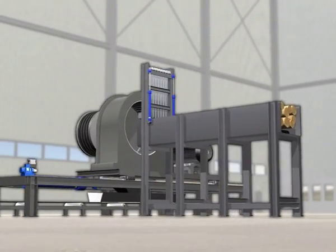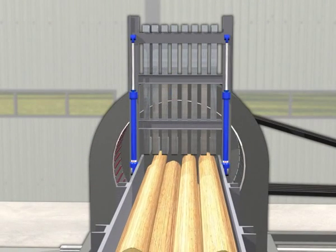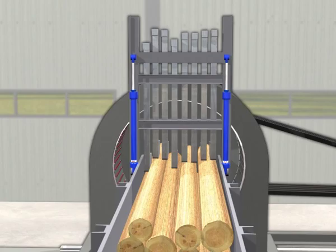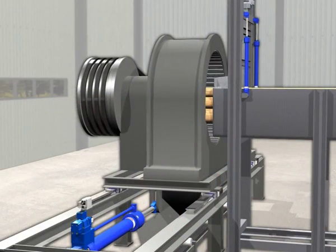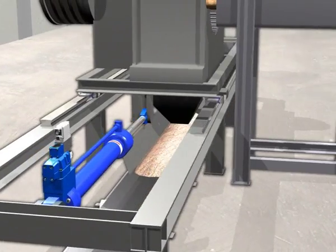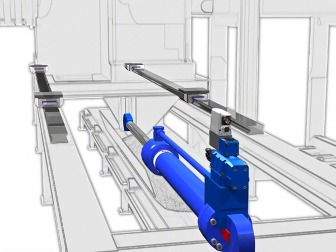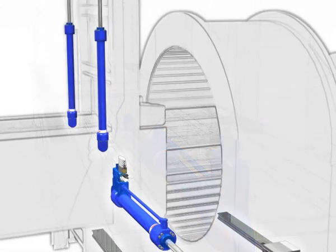Log flakers produce flakes for the production of OSB oriented strand board panels. To this end the logs are moved into the knife ring and clamped there. The knife ring is then moved using an electro-hydraulic cylinder axis. The robust linear guides from Rexroth handle anything this tough working environment can provide.